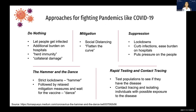Another approach is the 'hammer and the dance,' which has been commonly followed during COVID-19. This involves strict lockdowns — the hammer phase — to reduce infections, followed by relaxed mitigation measures while waiting for the vaccine, which is the dance. The idea is that the vaccine will induce immunity so people can return to normal lives. Another approach is rapid testing and contact tracing, which involves testing populations to identify the disease, then carrying out contact tracing and isolation for those with possible exposure, helping to control the pandemic.